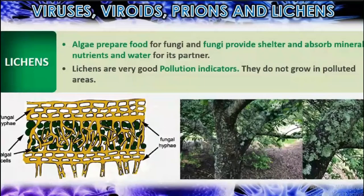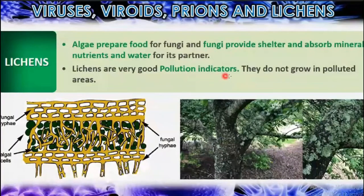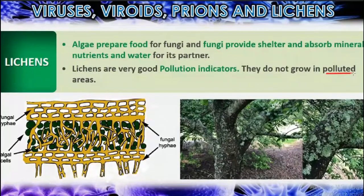In the picture you can see the presence of lichens. This white part represents the mutual association between algae and fungi — algae prepare food for fungi, and fungi provide shelter as well as mineral nutrients and water for the algae. Lichens are very good pollution indicators; they do not grow in polluted areas. If lichens are found in an area, it means there is no pollution.